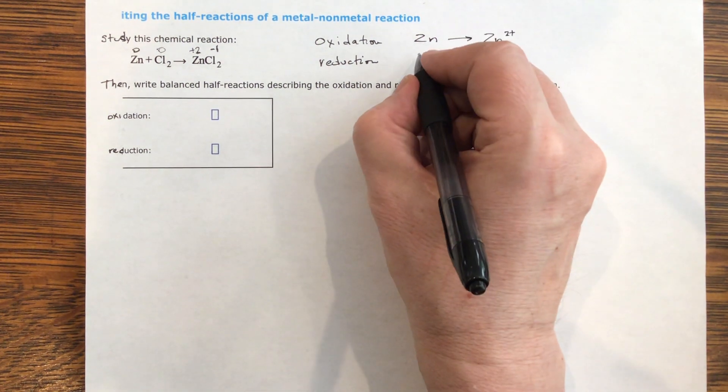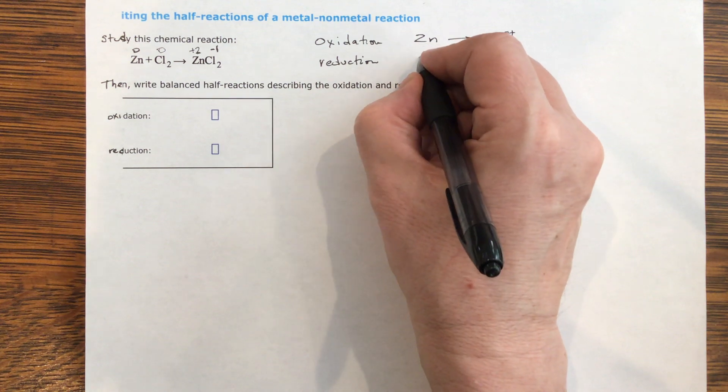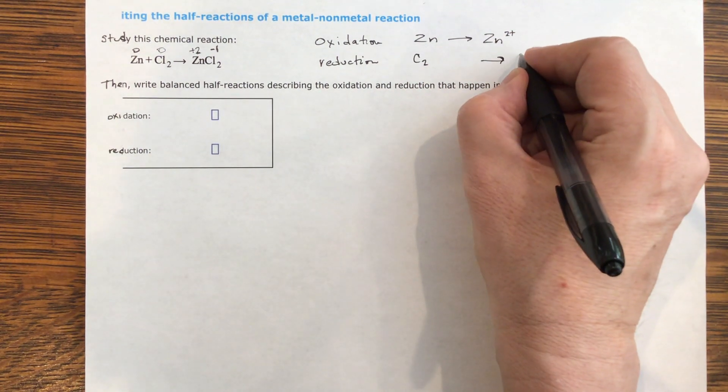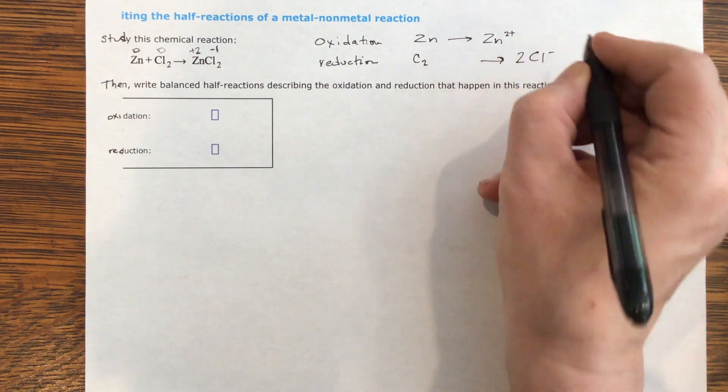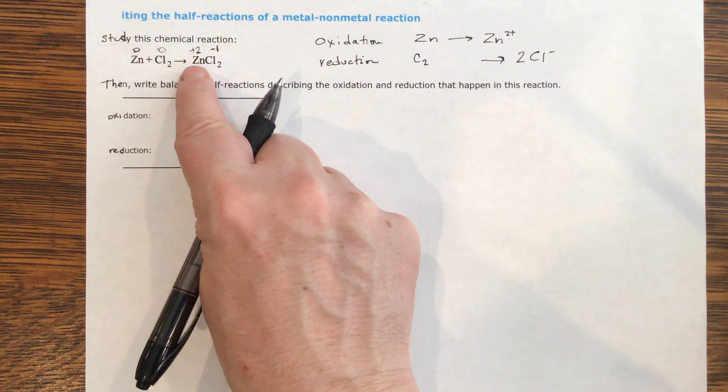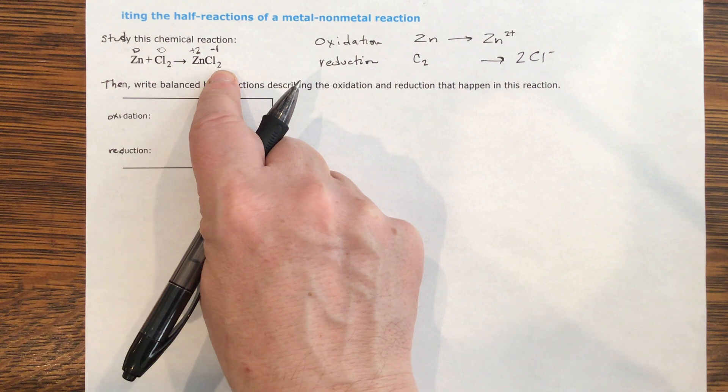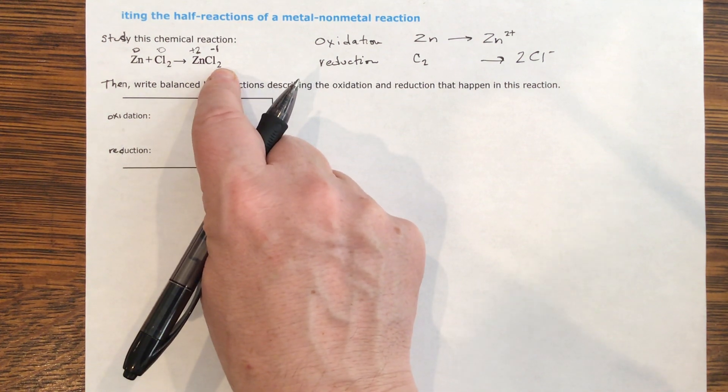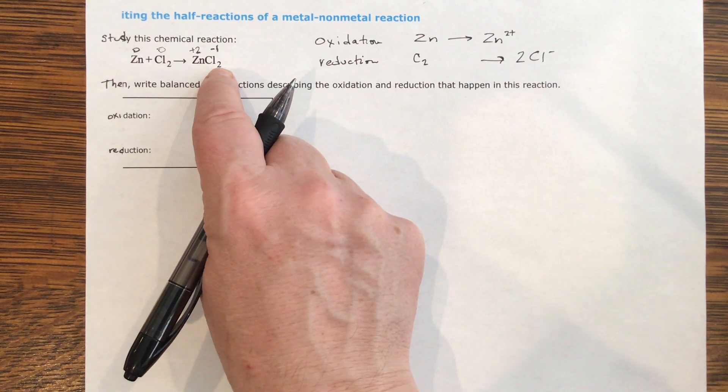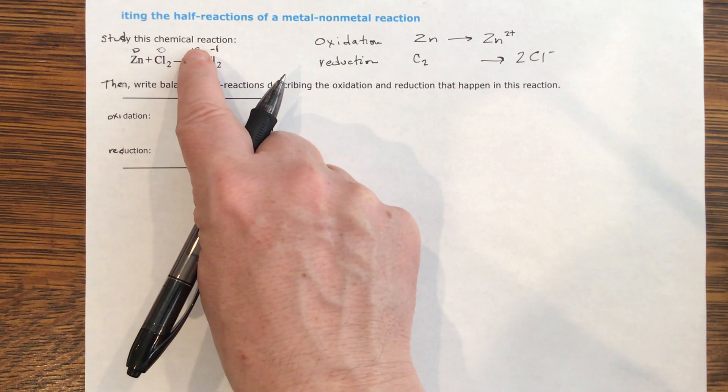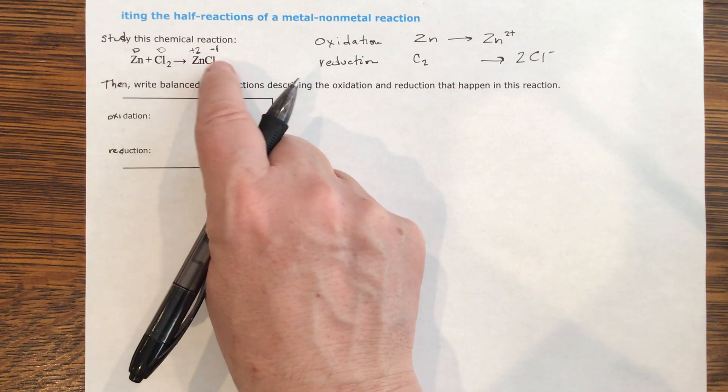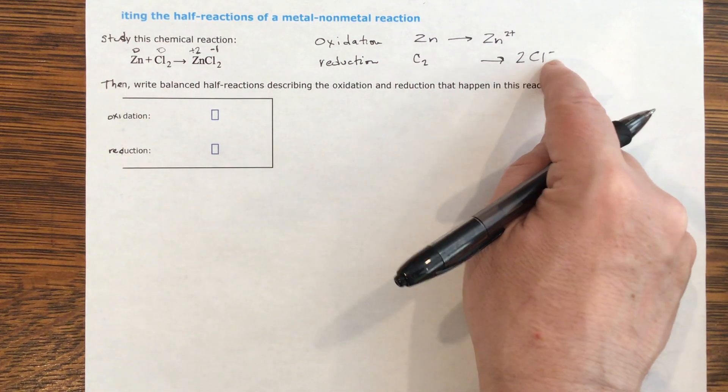And then the reduction, I'm going to have Cl2 goes to two Cl minuses. Now this is a compound, which means that it's in solution, and it will break apart. And if it breaks apart into charges, what do they break apart as? Two negative ones. So this will be two chlorine ions.